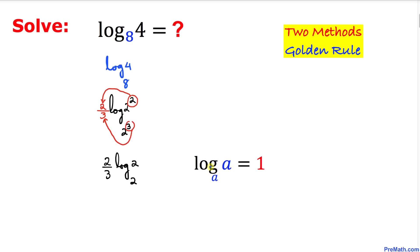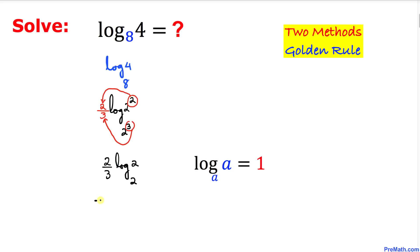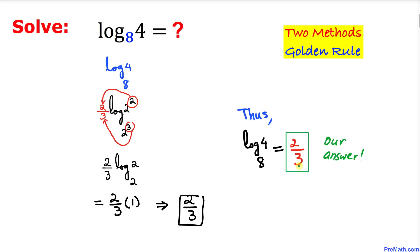This would simply become 2 over 3 times log of 2 with the base 2. Here's a crucial logarithmic rule: when our argument and base are the same, that will always be equal to 1. So since our base and argument are both 2, that equals 1. Thus our answer turns out to be 2 thirds.